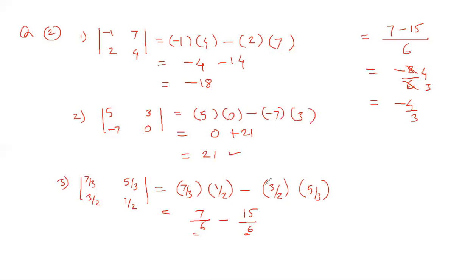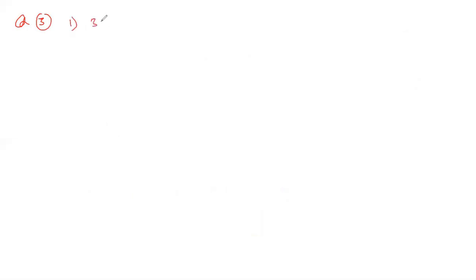This was question 2. Now let's come to question 3: solve the simultaneous equations using Cramer's rule. The first set is: 3x minus 4y equals 10, and 4x plus 3y equals 5.